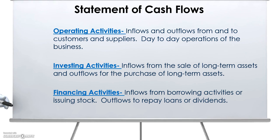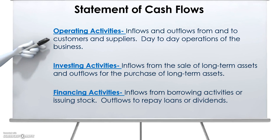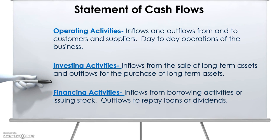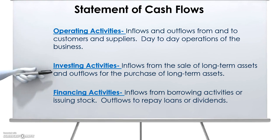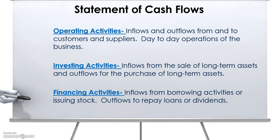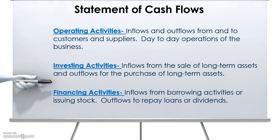Investing activities are inflows or outflows from the sale of long-term assets. Things like buying a building or selling a piece of machinery would be included under the investing activities section. Financing activities come from borrowing activities or from things like issuing stocks. Earlier we talked about issuing common stock — that would be a financing activity as we sell that stock to raise capital. It could also be the result of going to a bank and getting a loan. We typically see longer-term activities under financing activities.